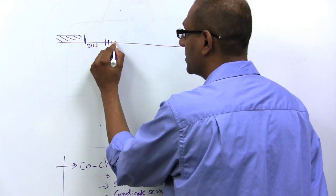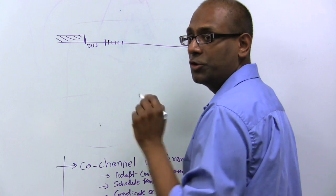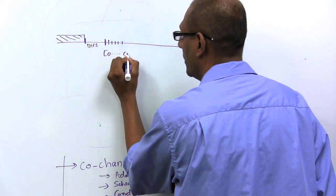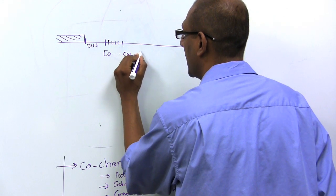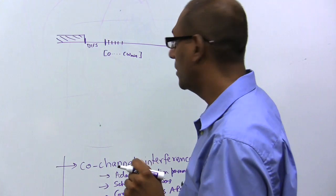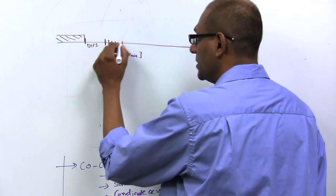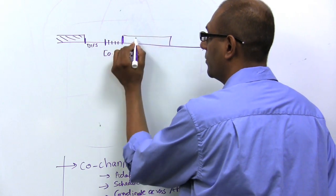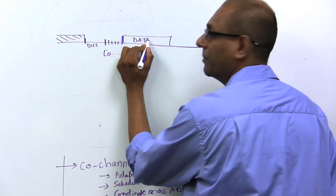And then you pick a randomized backoff that is uniformly distributed between a value zero to some value that we'll call CW min in the standard. It is really some max value. We'll call this the contention window. And if it turns out that after you pick a value and then you count down to zero, if the channel is still free, then you start transmitting your data.